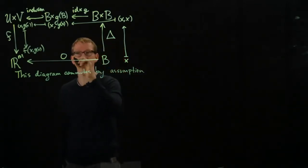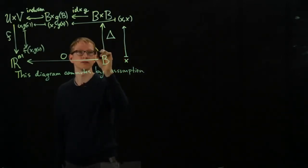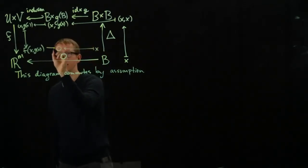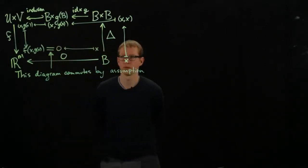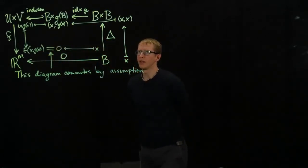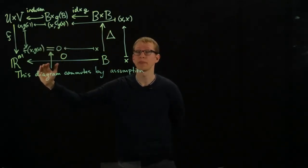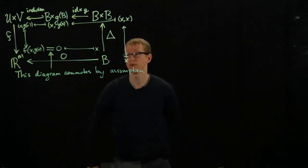So that means that here, X gets sent to 0. So X gets mapped to 0. And this equality right here is the assumption that this diagram commutes. If you look at this diagram, every single one of these functions is differentiable. As a result, we can apply the chain rule.